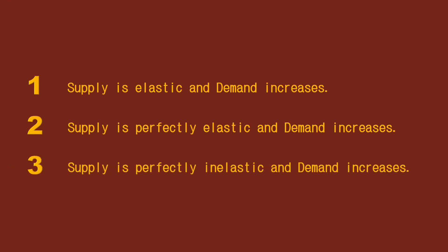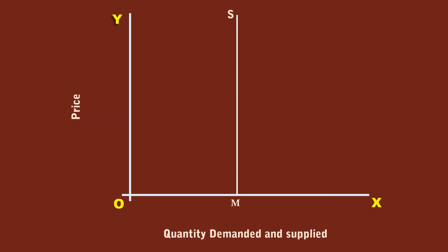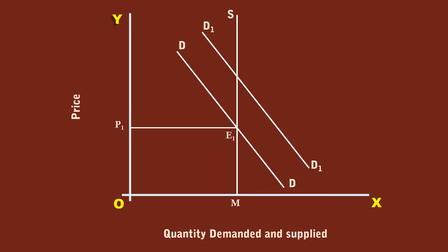Case 3: Supply is perfectly inelastic and demand increases. Market supply curve MS is perfectly inelastic, hence the supply curve is vertical and parallel to the Y axis. The demand curve DD cuts the supply curve MS at E1. The equilibrium price is P1 and quantity is M. After an increase in demand, the new demand curve D1D1 is formed to the right of DD. The immediate effect is there arises an excess demand to the extent of E1 to E2. The consumers are willing to buy E2 units at price P1, but the sellers want to sell only E1 units.